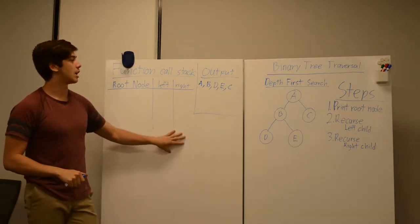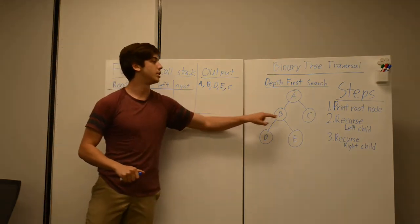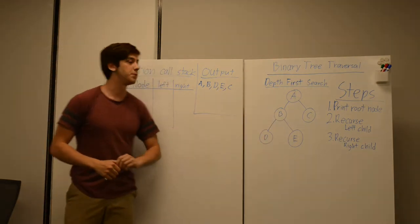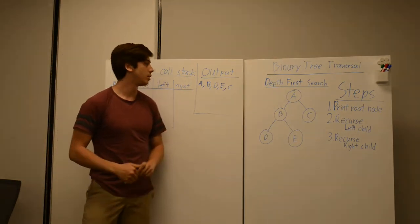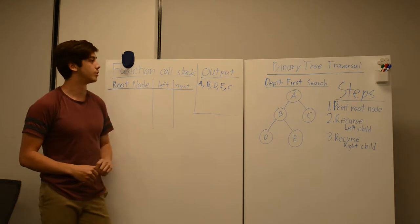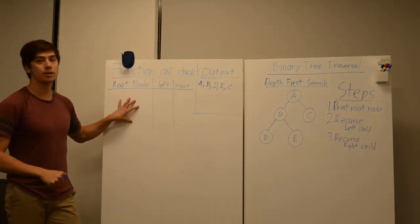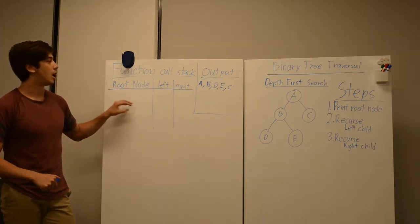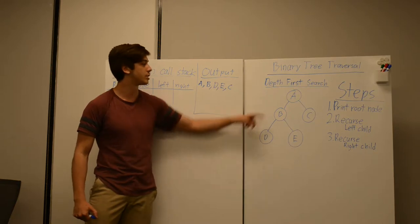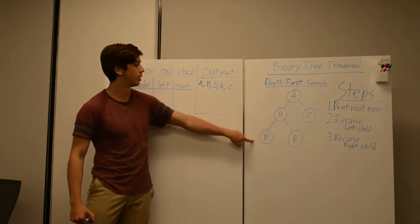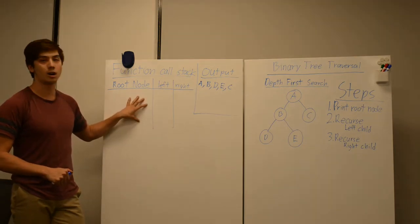The time complexity of this algorithm is O(N), where N is the number of nodes in the binary tree. This is because the algorithm touches each node one time throughout the full traversal. The space required for this algorithm is the maximum size the function call stack will grow, which is the same as the height of the binary tree. So for this example, our height is three, meaning the max space we need is enough for three call stack frames.